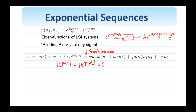From the Cartesian form, the magnitude is cosine squared plus sine squared, and that's equal to 1. The first property we want to examine is the periodicity of these complex exponentials with respect to the frequency omega 1 and omega 2.